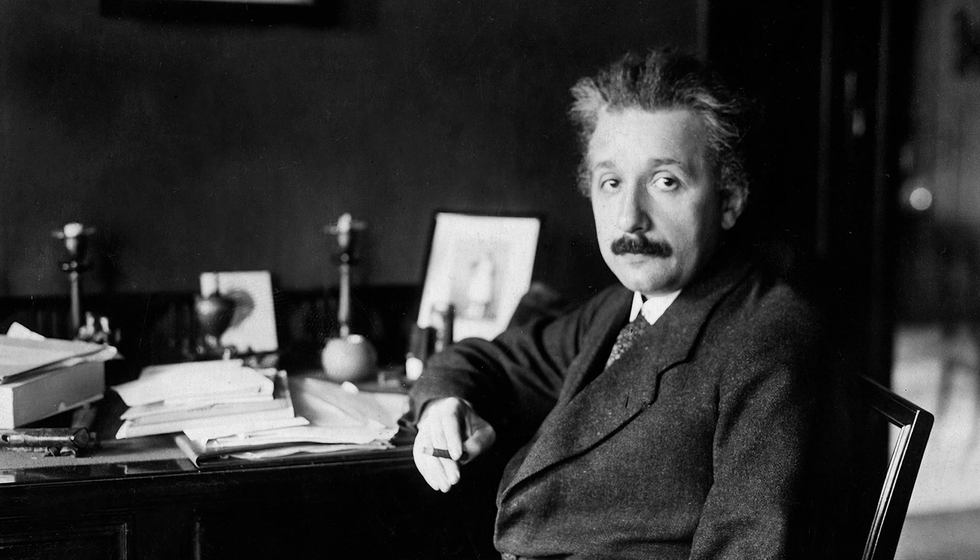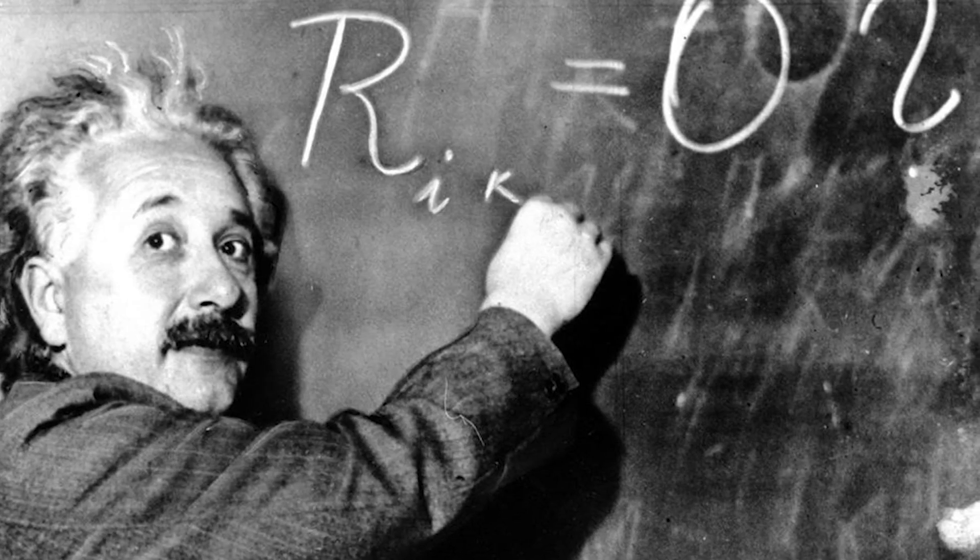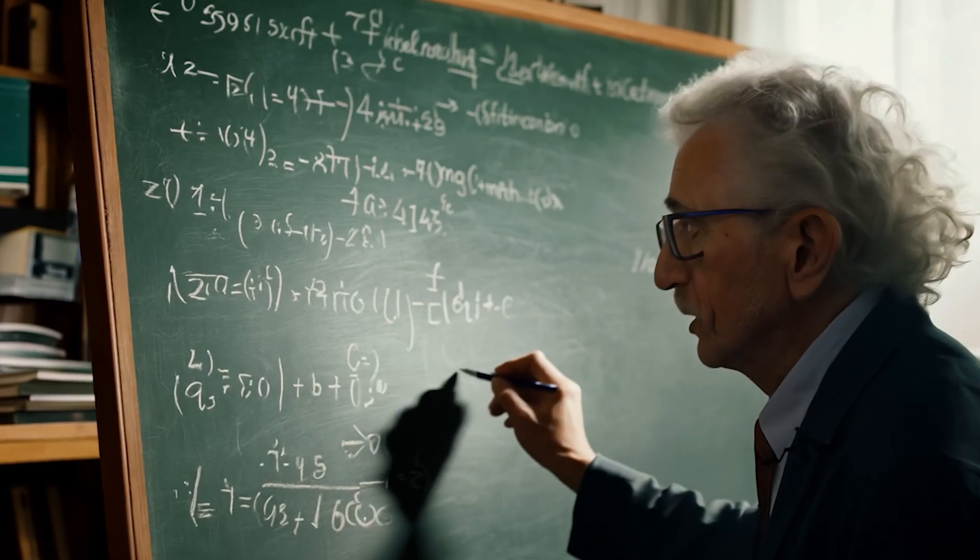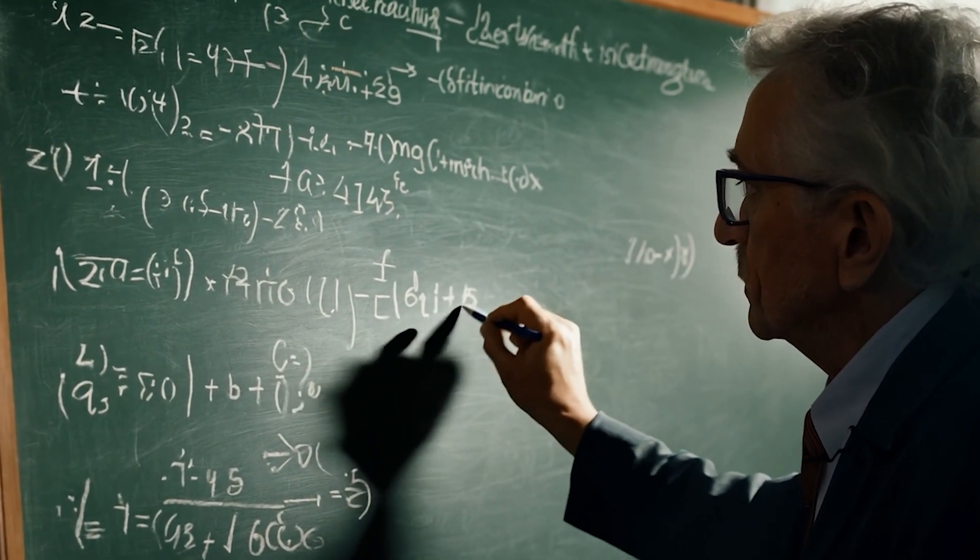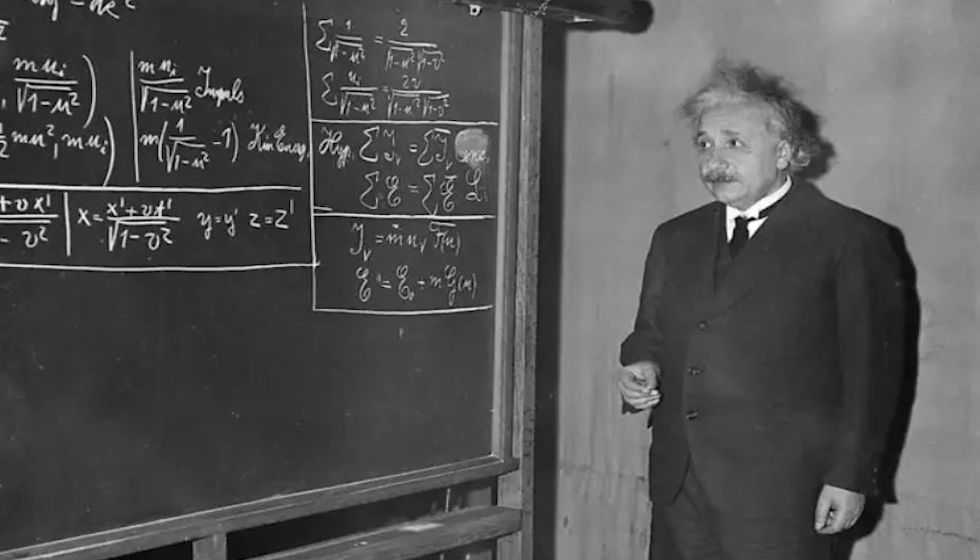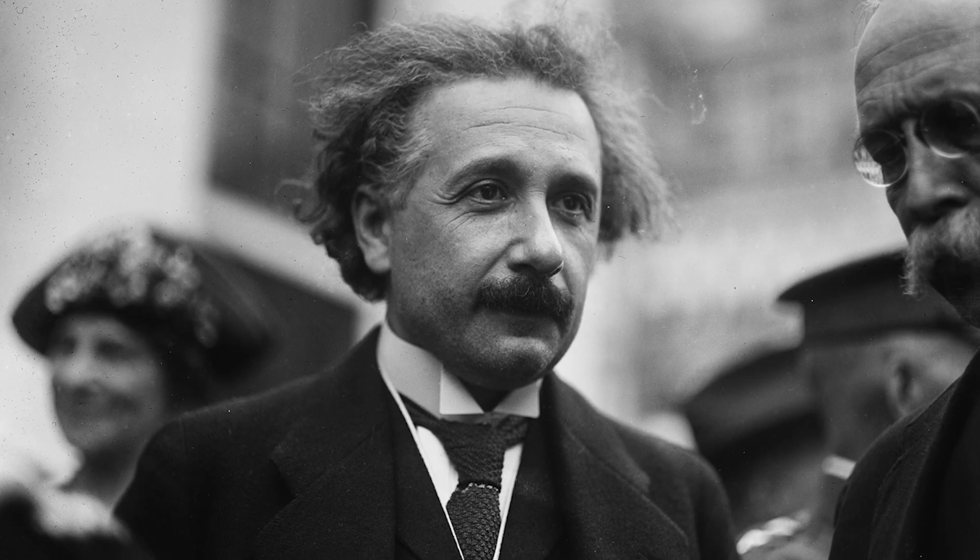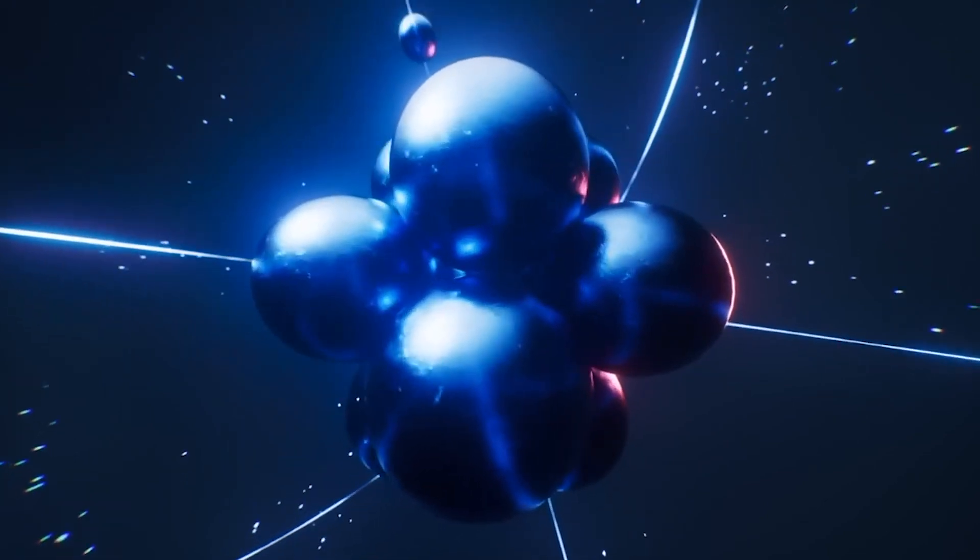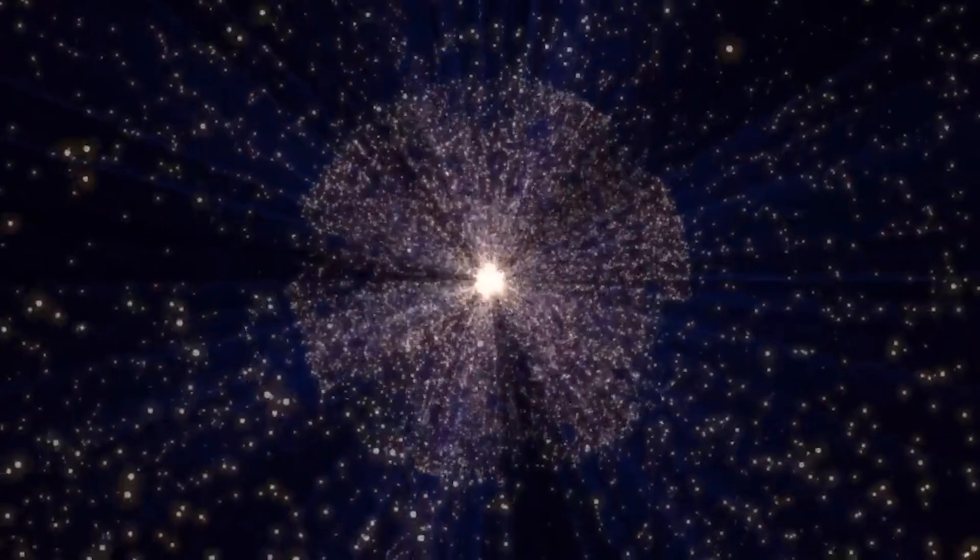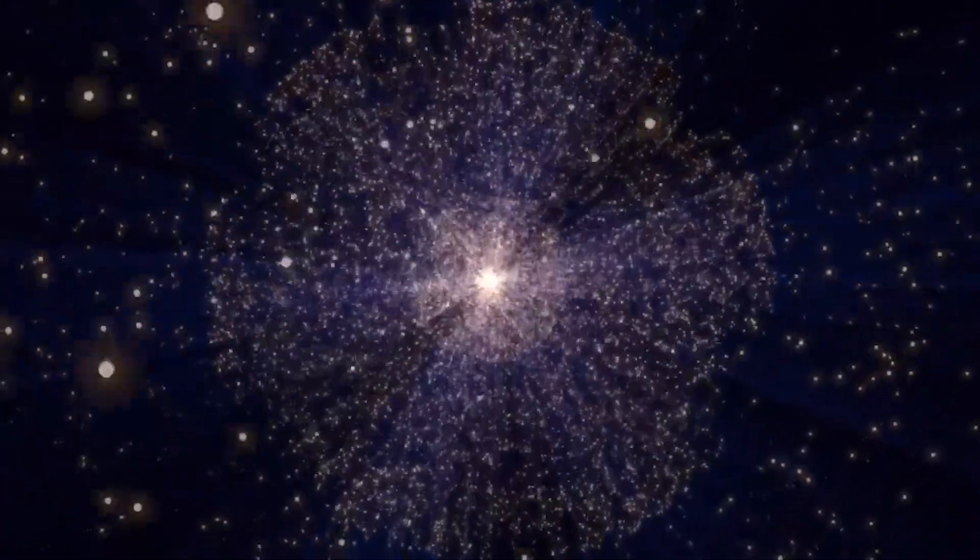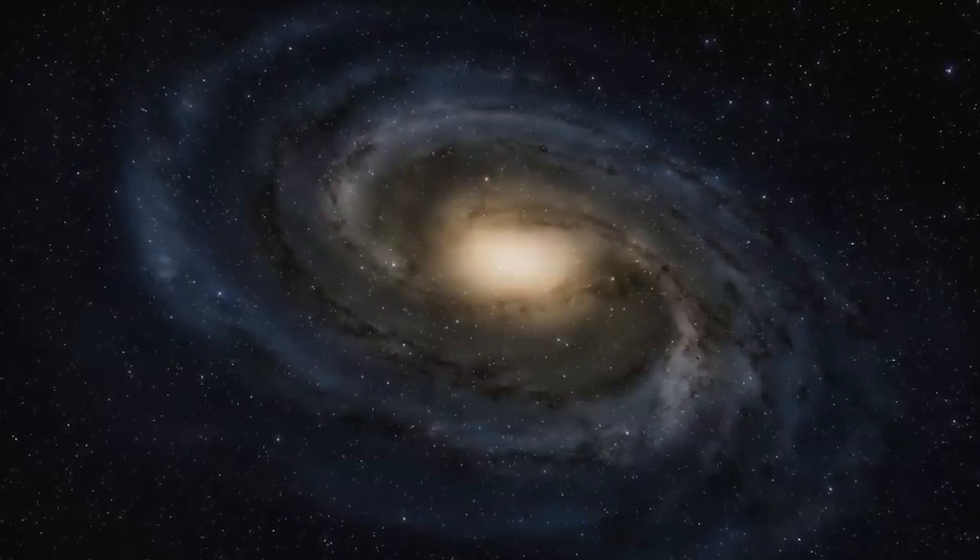Albert Einstein, on the other hand, strongly disagreed. He found the idea of a cat existing in a superposition of being both alive and dead completely absurd and unrealistic. In his letters to Schrödinger, Einstein argued that quantum mechanics was incomplete. He believed that the cat's state should not depend on observation, but rather be determined by some deeper yet undiscovered objective reality. Einstein had long opposed the probabilistic nature of quantum mechanics and famously said, God doesn't play dice with the universe.